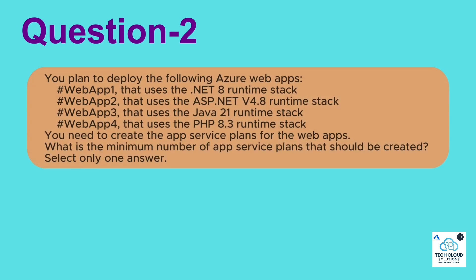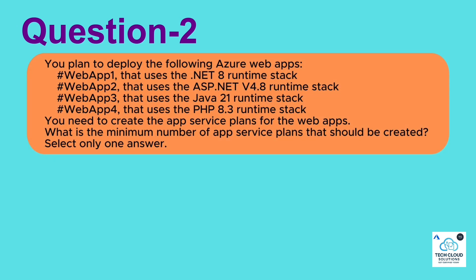Question 2: You plan to deploy the following Azure web apps. Web App 1 uses the .NET 8 runtime stack. Web App 2 uses the ASP.NET v4.8 runtime stack. Web App 3 uses the Java 21 runtime stack. Web App 4 uses the PHP 8.3 runtime stack. You need to create the app service plans for the web apps. What is the minimum number of app service plans that should be created?